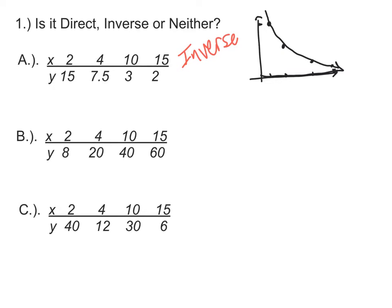In the second example, as the x's get bigger and bigger, take a look at the y values. 8, 20, 40, 60. Those values are getting bigger and bigger. And that would point to this relationship being an instance of direct variation.